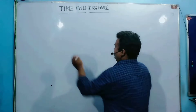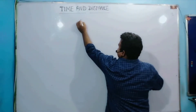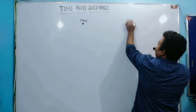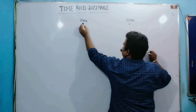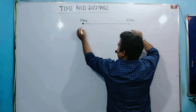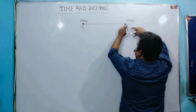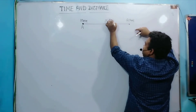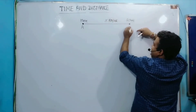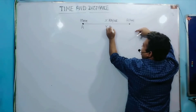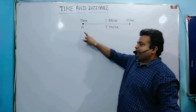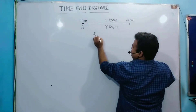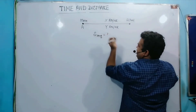Look at the board. In the formula, suppose this is your home and this is the school or university. A man starts a journey from home to school at x km per hour, and while returning it's y km per hour. Then what is A's average speed? You need to find out the average speed.